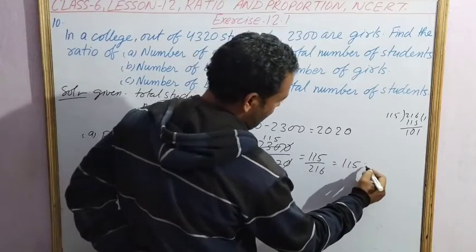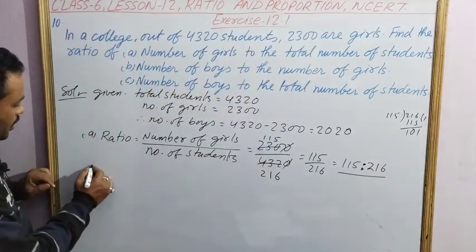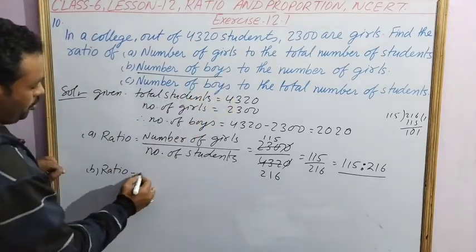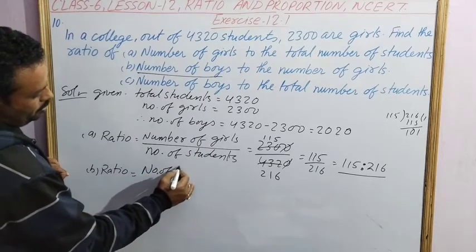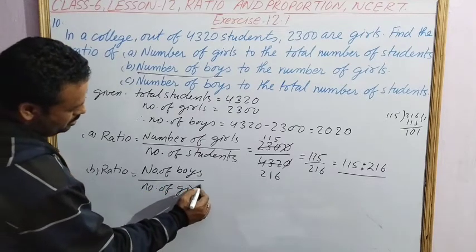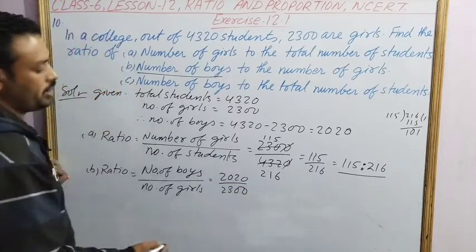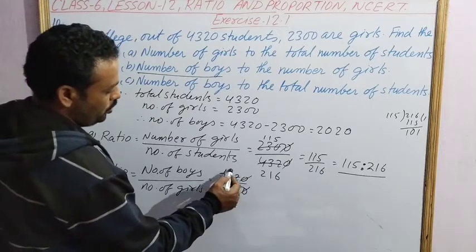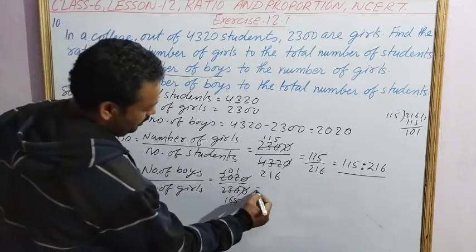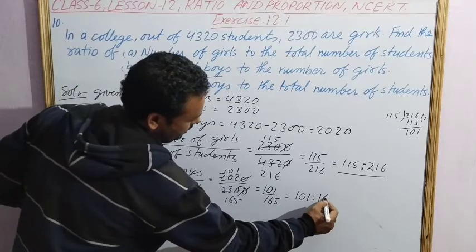First ratio is 115 is to 216. Second ratio: number of boys to number of girls. Number of boys in the numerator, number of girls in the denominator: 2020 by 2300. Divide by 2: 1010 by 1150. That gives 101 by 165. So the ratio is 101 is to 165.